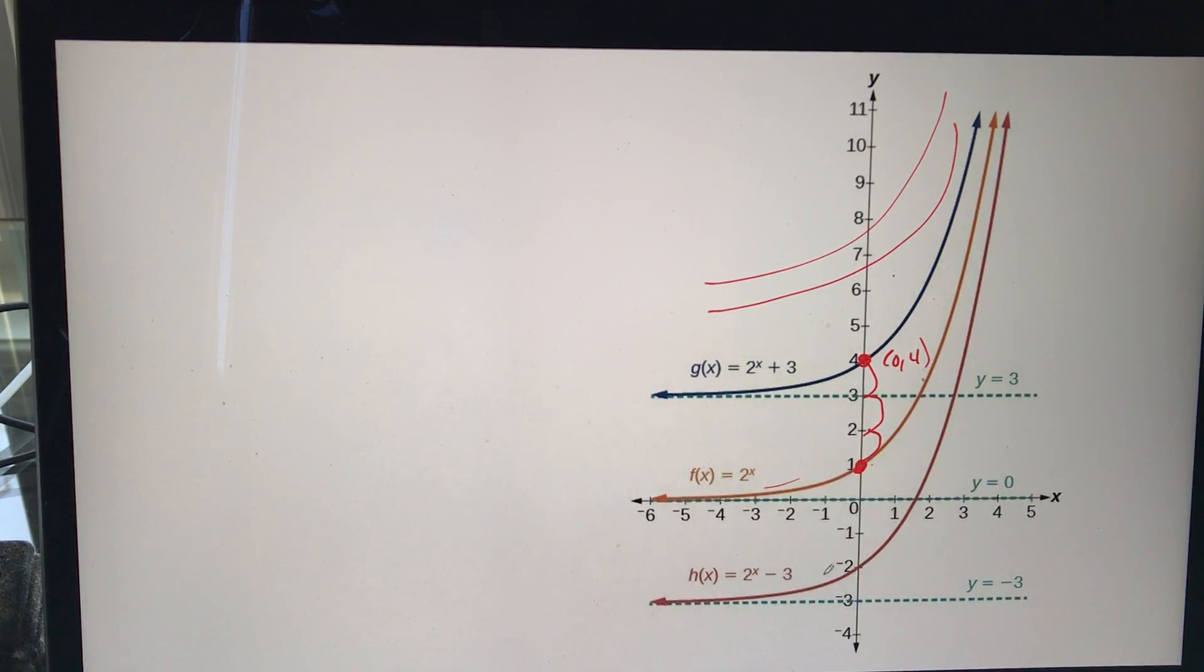This is 2 to the x minus 3. So here's my point again. That's my (0, 1). It goes down 3, 1, 2, 3, down to there. That coordinate would be (0, negative 2).